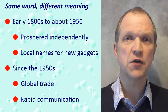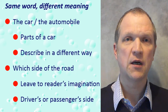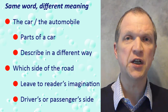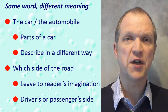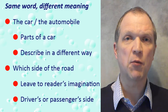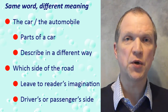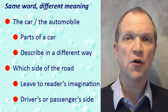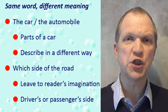Let's focus on three examples. The evolution of the car took off in the early 1900s. Therefore, the names for the parts of a car often differ, for example, between British English and American English. In the UK, a car's bonnet, windscreen and boot are the hood, windshield and trunk in the USA.